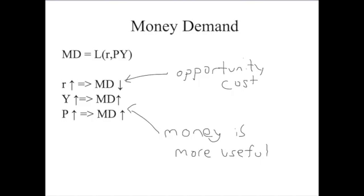These three variables are pretty much exhaustive of anything that influences money demand. There's R, the opportunity cost — higher R means less money demand — and Y and P, which are the demand shifters. The higher nominal GDP gets, either because of higher prices or higher real GDP, the more money people need to make purchases, so the higher money demand gets.